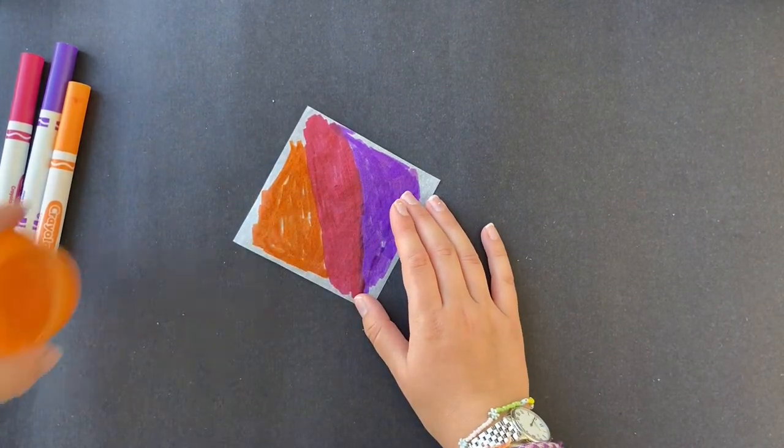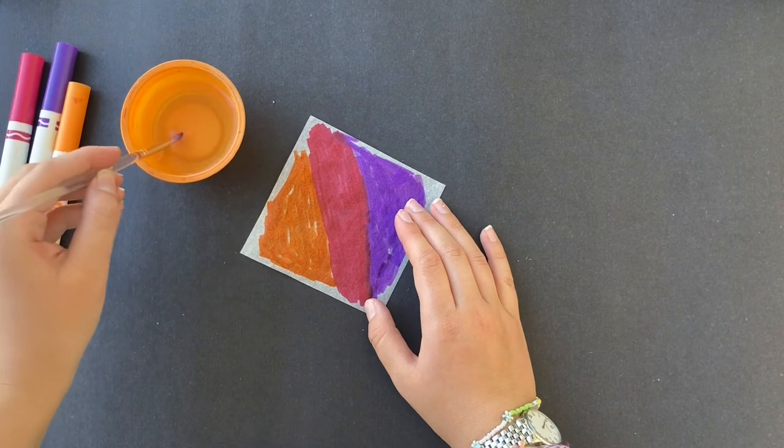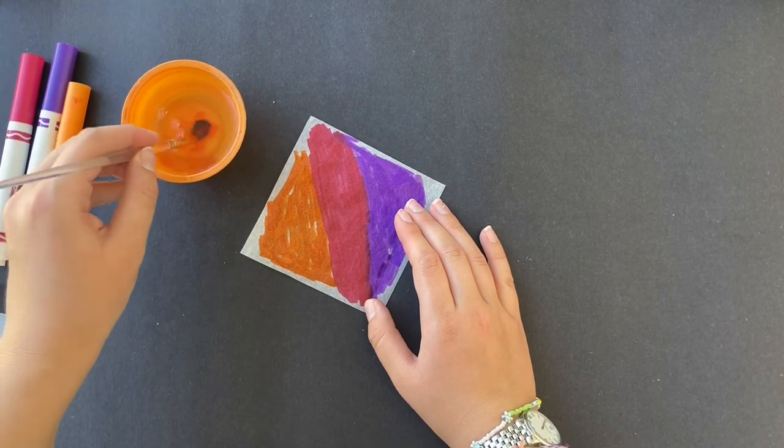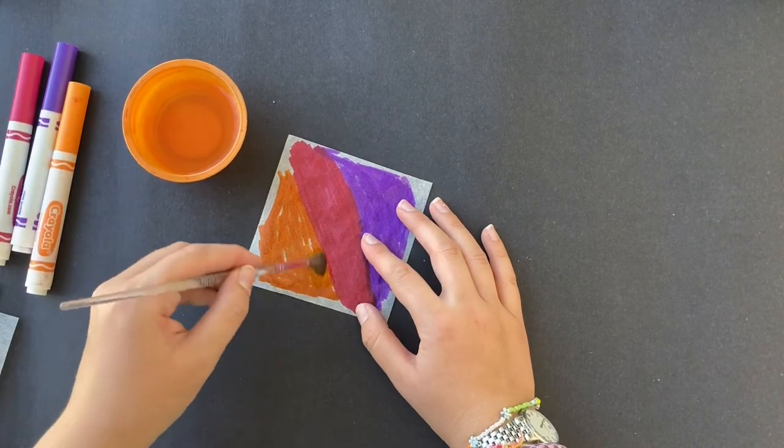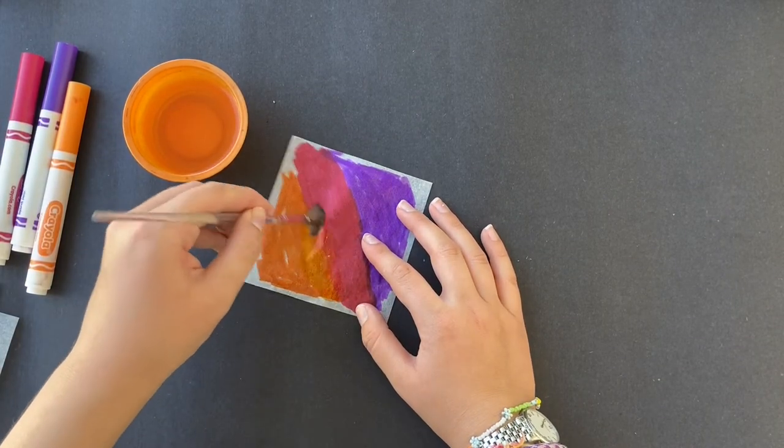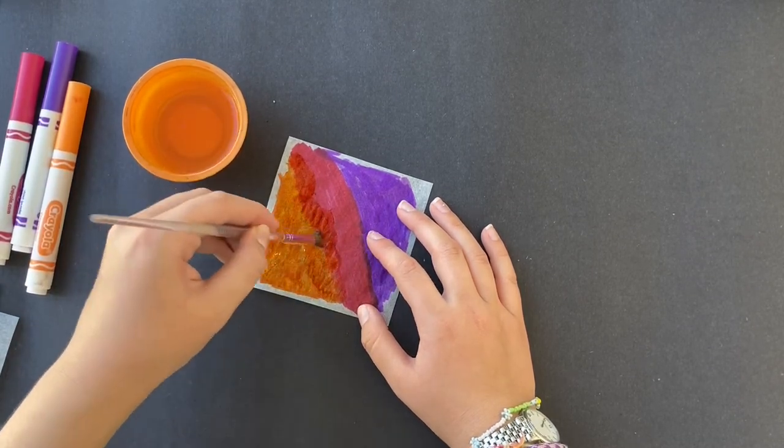Now that I've done that, I'm going to grab my water and a brush and I'm going to dip my brush in the water. Then I'm going to carry that water over to my paper and start blending the colors with the water. You can see as the colors start blending, it creates this really cool effect.